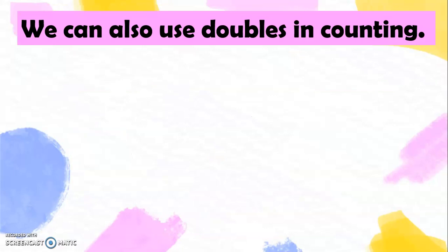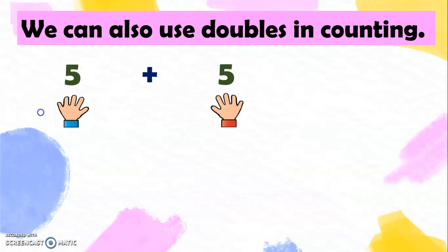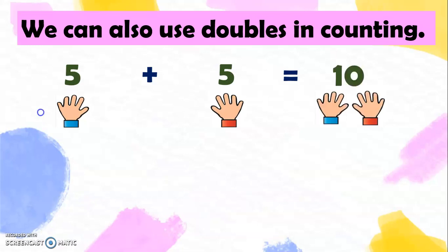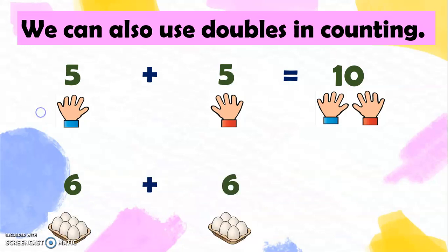Now we can also use doubles in adding. For example, we have 5 — using our fingers, 5 fingers plus 5 fingers equals 10 fingers. And here we have 6 eggs plus 6 eggs equals 12 eggs.